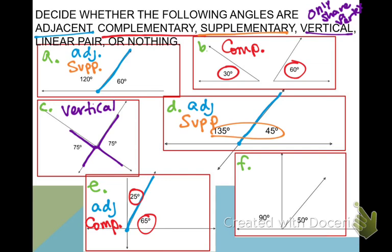They share this vertex. Letter D, they're adjacent, so they're definitely not vertical. Letter E, again, adjacent, not vertical. Letter F, they share a vertex, but what do we know about the measurements of vertical angles? They're congruent. Are 90 and 50 the same? No. So these are not vertical.